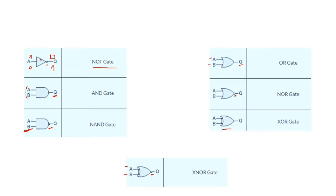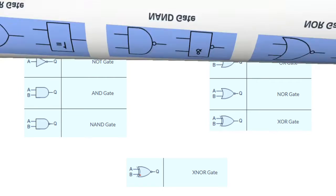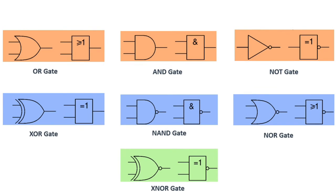So we have: NOT gates, AND gates, NAND gates, OR gates, NOR gates, XOR gates, and the XNOR gate. Now let's go to the next slide.